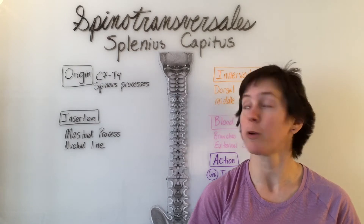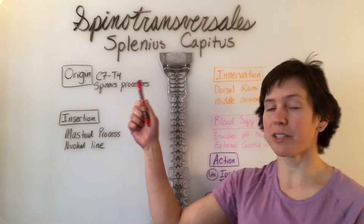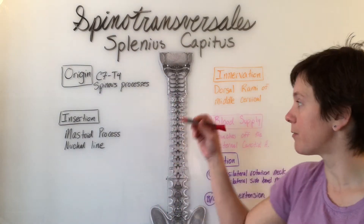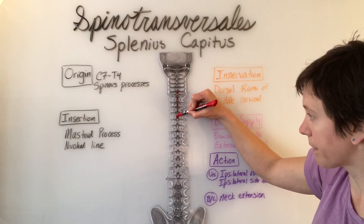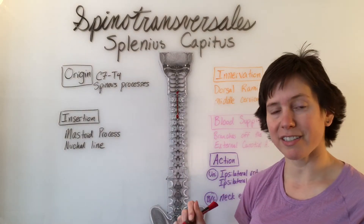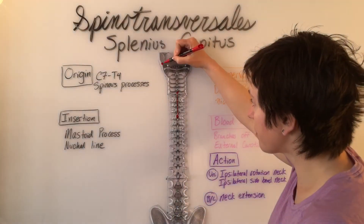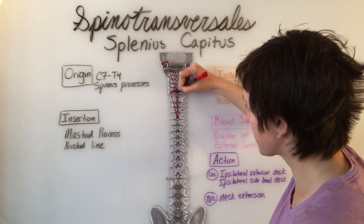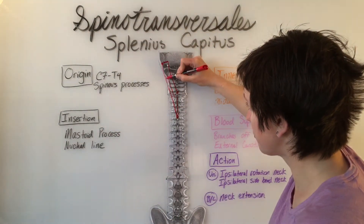First we'll go over the splenius capitis. It originates on the spinous processes of C7 to T4 and inserts on the mastoid process and the lateral part of the nuchal line. The muscle belly is traveling superiorly.